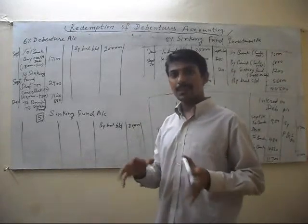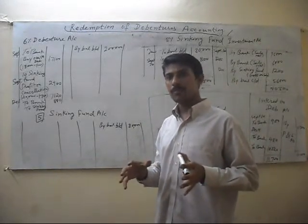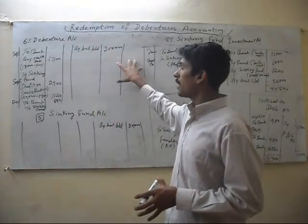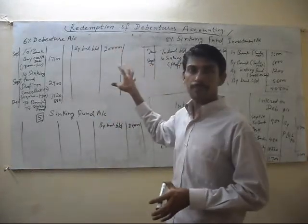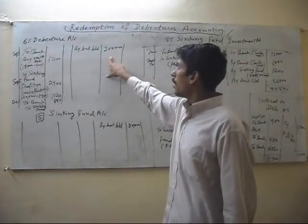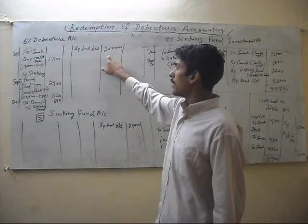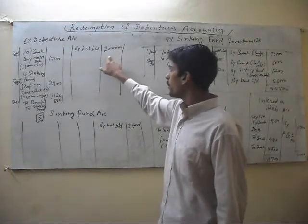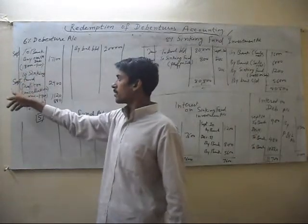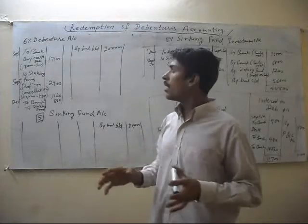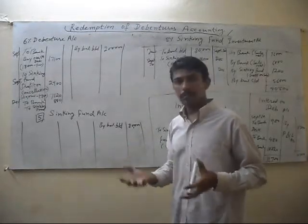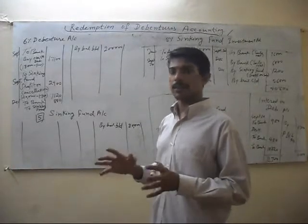Please see my first video lecture in which I have shown the problem. In the problem, we take our liability on the credit side by balance brought down. In September and in December, we buy our own debentures in the market and then we cancel them.